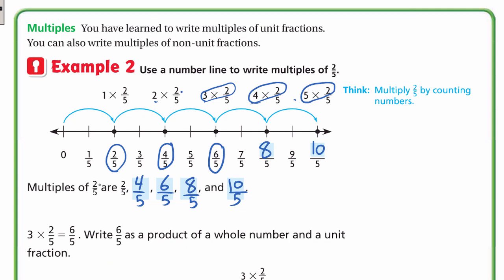If you notice a pattern, it's like the multiples of 2: 2, 4, 6, 8, 10, and so on — expressed as fifths. We keep writing the denominator. So you get the multiples of the numerator and just keep the denominator.